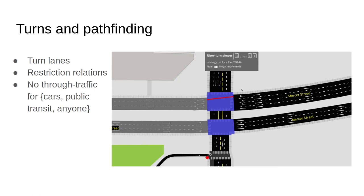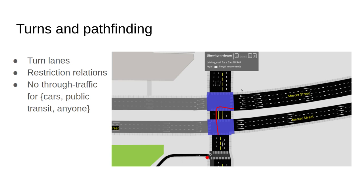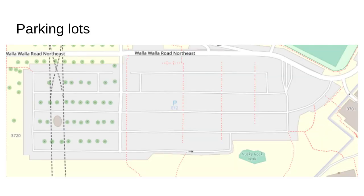The second thing I can offer is a model of movement between different lanes, which comes from the mapped turn lanes and restriction relations in OSM. The pathfinder can interpret these things and also handle areas where there's no through traffic allowed for some or all road users.